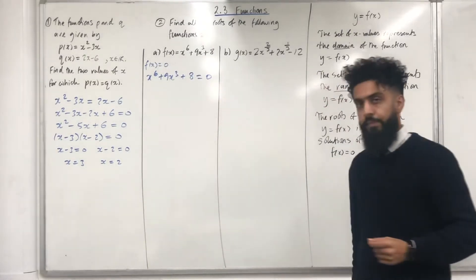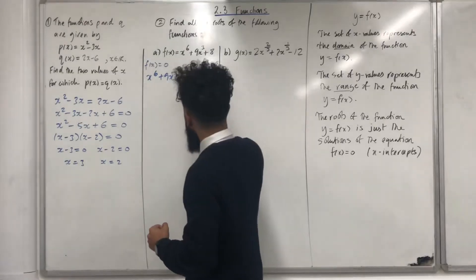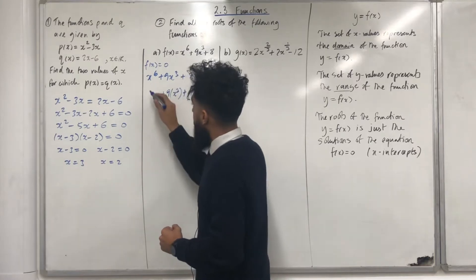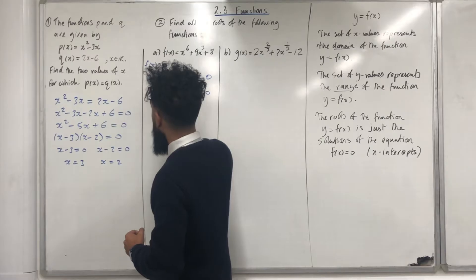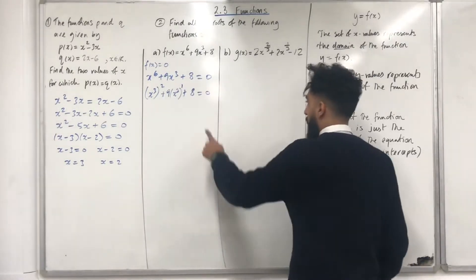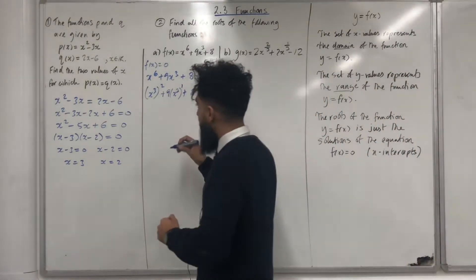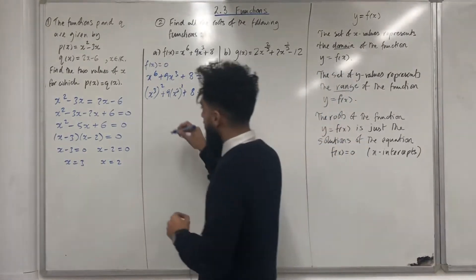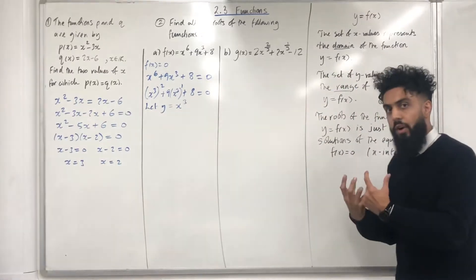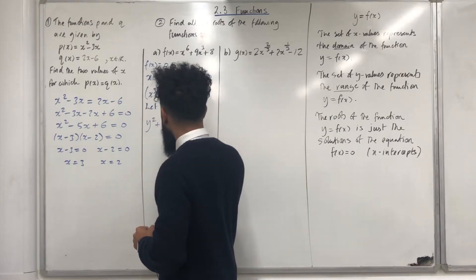I know what my f of x is. It is x to the power 6 plus 9x cubed plus 8, set equal to 0. There is a quadratic equation hidden within this particular equation. I'm going to rewrite this equation by putting x to the power 3 in brackets, rewriting the first term as x to the power 3 squared. So now we have a power 2, a power 1, and a constant — this equation is starting to look like a quadratic. I'm going to apply the substitution y equal x to the power 3, and rewrite the whole equation in terms of y, giving y squared plus 9y plus 8 is equal to 0.